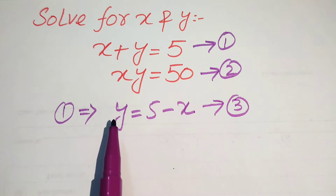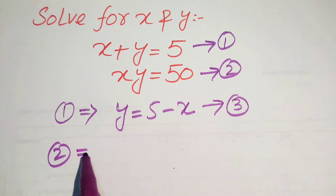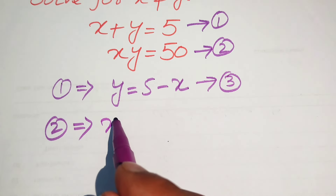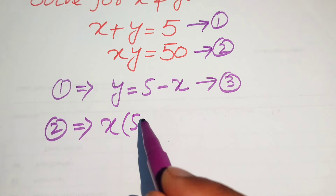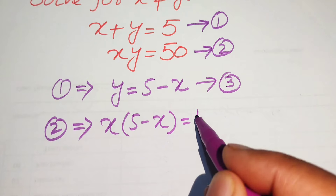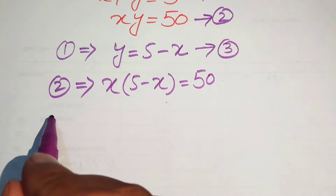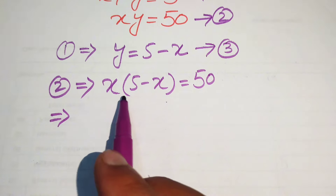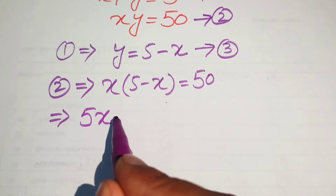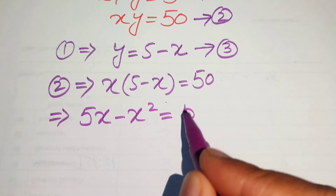Now we substitute this value of y in equation number 2. Equation number 2 implies that x times y, and the value of y is 5 minus x, equals to 50. In the next step we multiply x on both terms, and it is written as 5x minus x squared equals to 50.